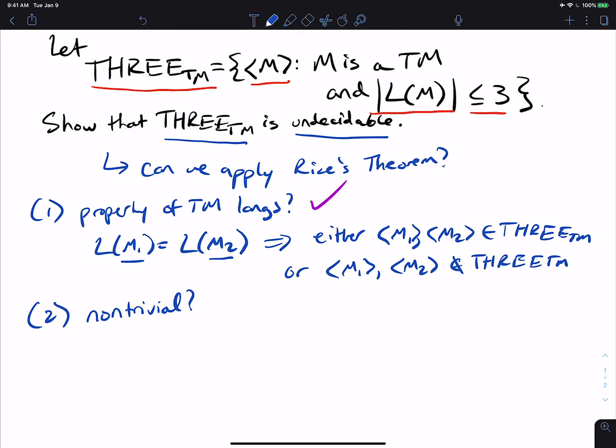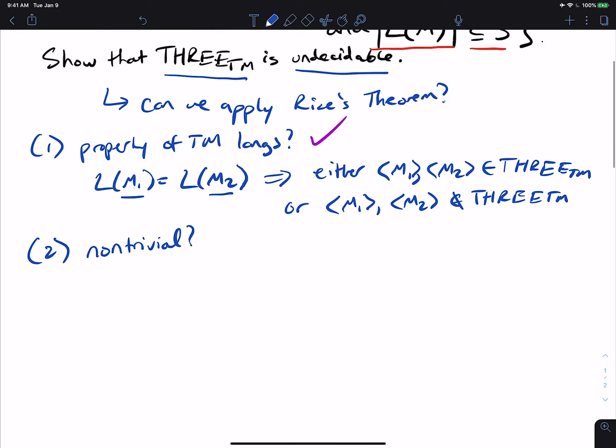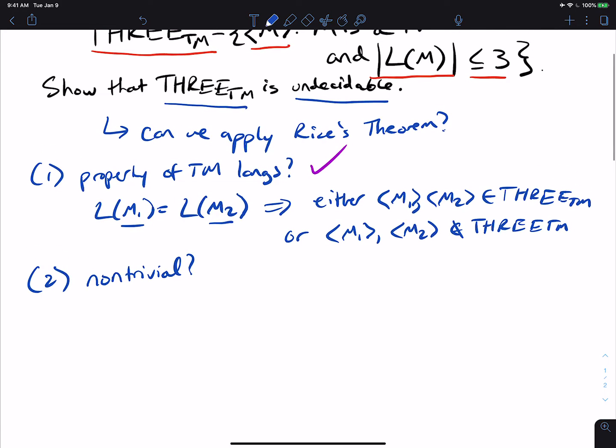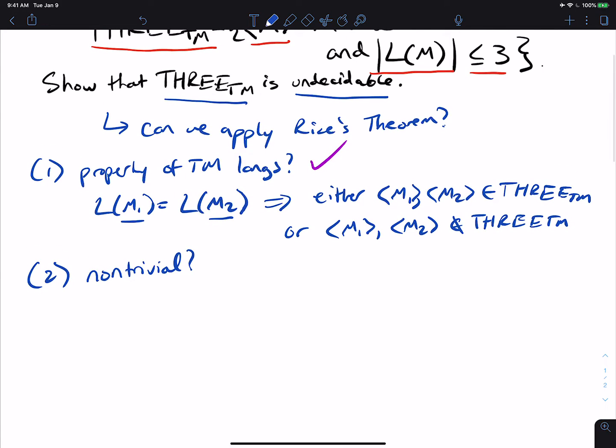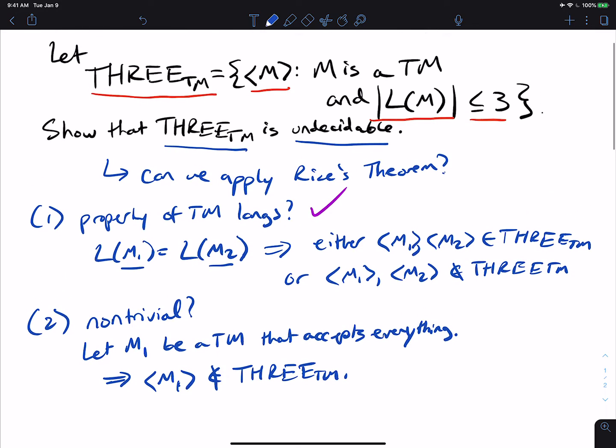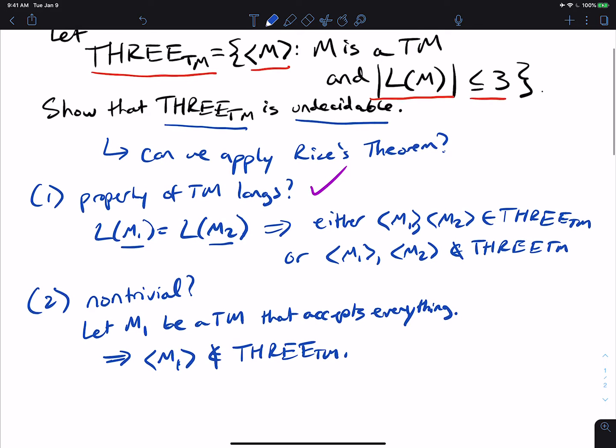Well, can we find a Turing machine that accepts more than three strings, so at least four strings? Well, a really easy example is the Turing machine that accepts everything. So let's let m1 be a Turing machine that accepts everything. So every single string it accepts. Well, then this implies that m1 is not in 3TM. Because, well, if it accepts everything, well, it accepts more than three strings, which therefore is not in 3TM.